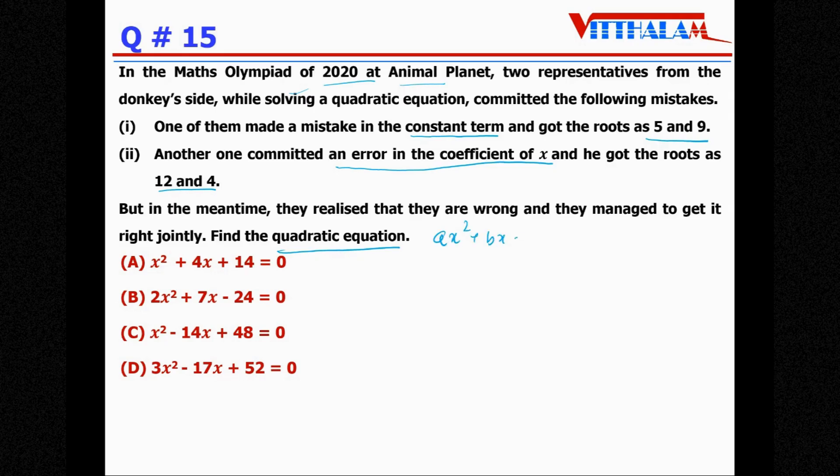So let's say that equation is x² + bx + c = 0. Now the first one who got the roots 5 and 9, he did a mistake in the constant term. So we know α + β = -b/a. That's the sum of roots. And product of roots is c/a. Sum is 14 = -b/a and 45 = c/a. But this we cannot consider because he had done wrong in the constant term. So from here we can say b = -14a.